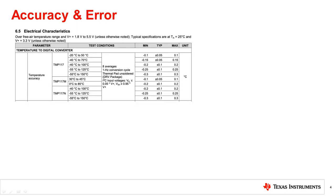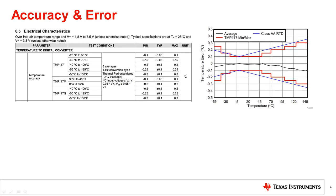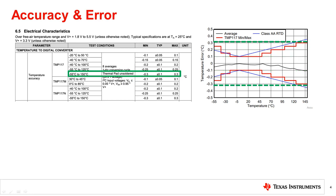In the electrical characteristics of a digital temperature sensor datasheet, the accuracy is often specified in a table as shown. This is also reflected in the temperature accuracy graph. The accuracy of the temperature sensor is specified over a specific temperature range. For example, in the full temperature range from -55°C to 150°C, the typical temperature error will be ±0.1°C. However, the maximum value falls between ±0.3°C across the entire operating range.